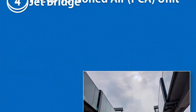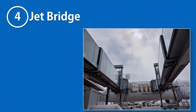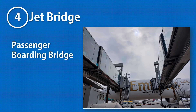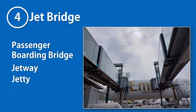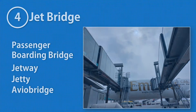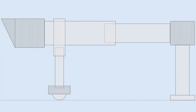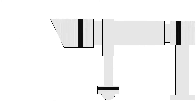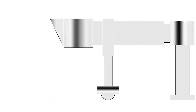A jet bridge, also known by many other names such as a passenger boarding bridge, jetway, jetty, and aviobridge, is the largest ground support equipment on the ramp. It is a movable tunnel structure that makes a bridge connection between the aircraft and the passengers.